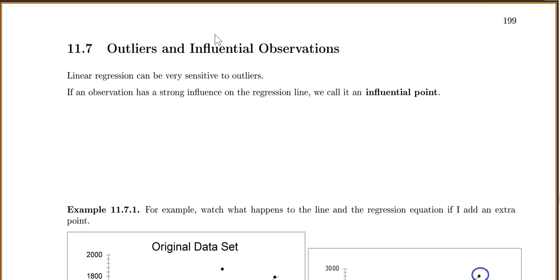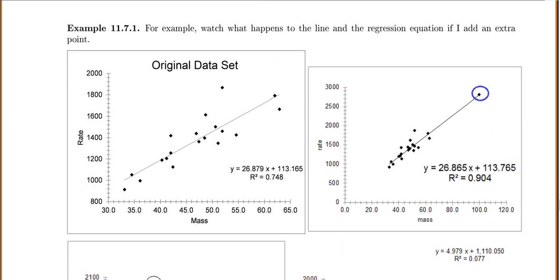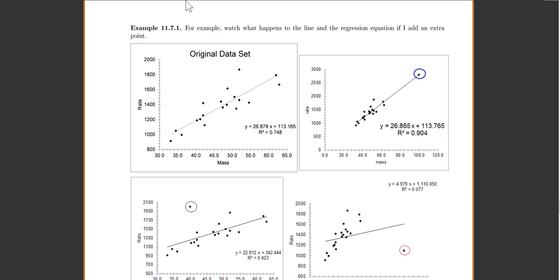Now let's talk about outliers and influential observations. So linear regression can be very sensitive to outliers. If an observation has a strong influence on a regression line, we call it an influential point. For example, I have a specific data set and I've added some extra points to see what would happen. So here's my original data set. The points all seem fairly close to the line. R squared is pretty good.